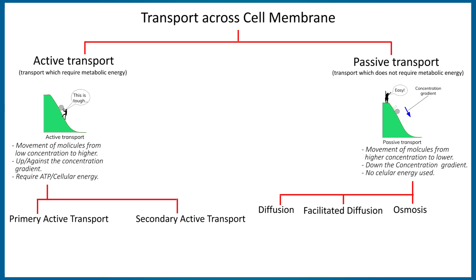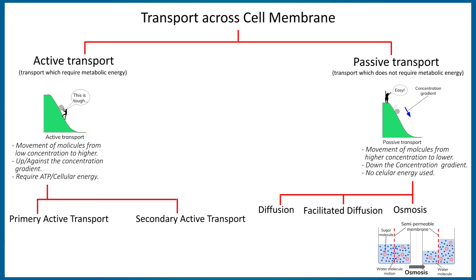Osmosis is defined as the movement of water or any other solvent from low solute concentration to higher solute concentration through a semi-permeable membrane. As you can see in this figure, the solute — that is sugar molecules, denoted by the orange color — its concentration is low on the left side and high on the right side. So the water, which is the solvent, will move from low solute concentration to higher solute concentration area through the semi-permeable membrane, and this is called osmosis.